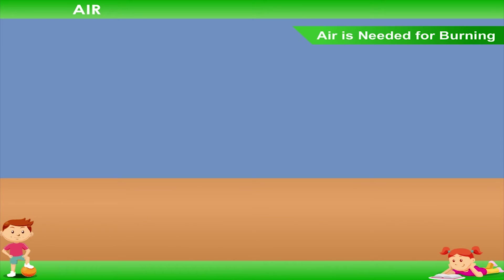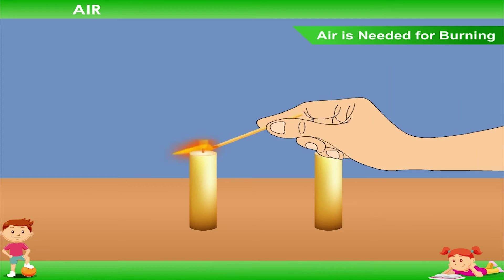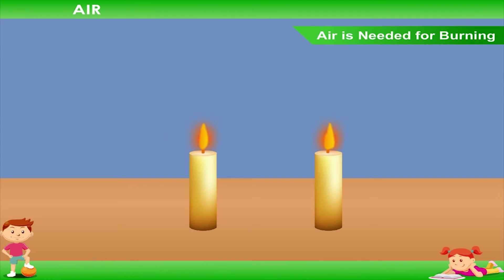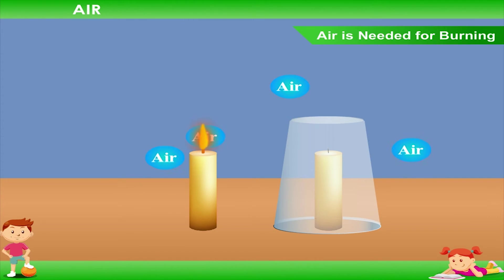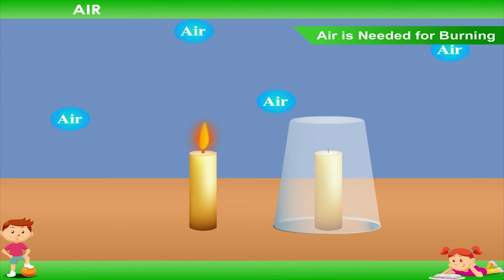Air is needed for burning. Take two candles and fix them on a table. Ask an elder to light both the candles. Now cover one of the candles with a glass tumbler. After some time, you will see that the candle covered by the tumbler goes off. The candle covered with the tumbler could not get air to burn. A thing can keep burning only when it gets air.